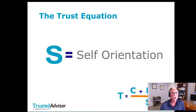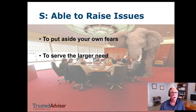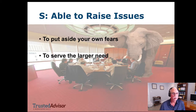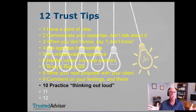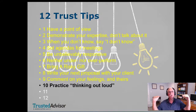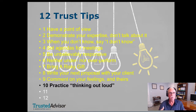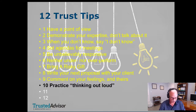Now let's go to the denominator — self-orientation, the one that goes the other way. Part of it is being able to raise issues, speak to the elephant in the room, and serve the larger need. The biggest problem is our own fears and self-obsession. One tip: practice thinking out loud — literally use those words, 'Let me just think out loud with you for a minute.' That's an act of low self-orientation because it says, 'I'm not going to operate out of fear here — I'm just going to share some things.'